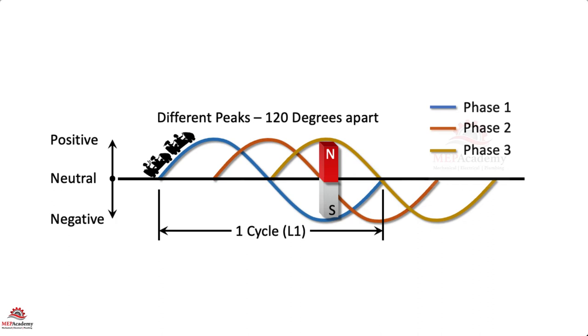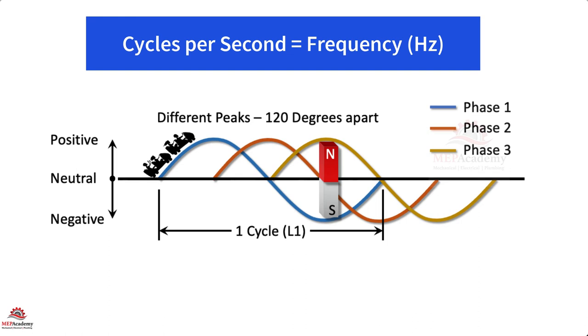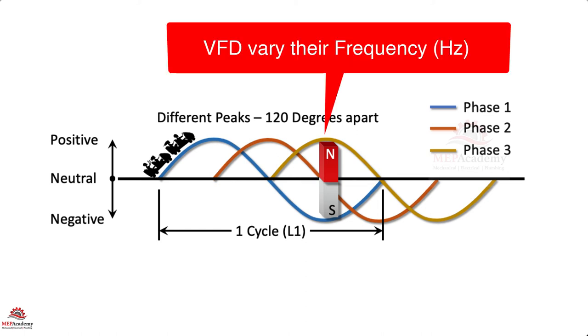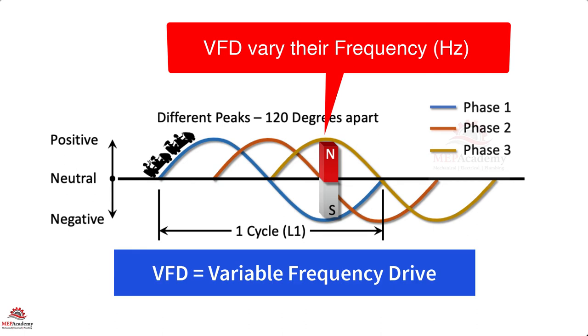The cycles per second is called frequency, and is either 50 or 60 Hz. Remember, motors with VFDs can vary their hertz, and if you aren't familiar with this concept, then see our video on VFDs, Variable Frequency Drives, in the video description below.